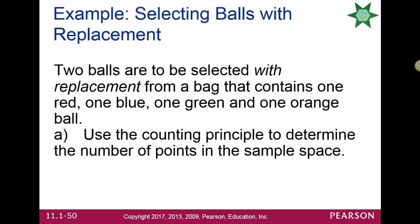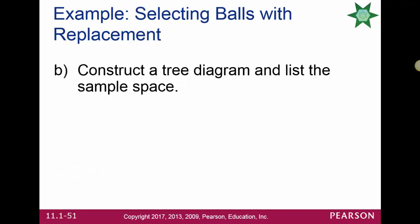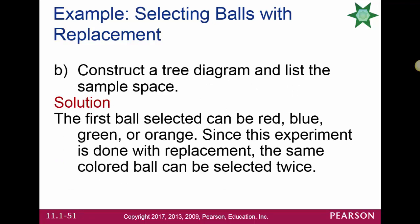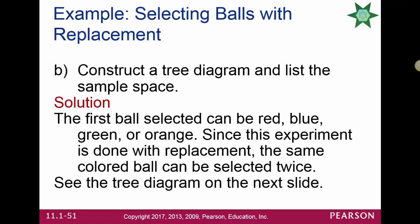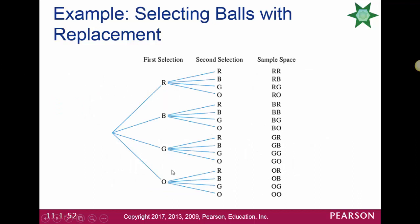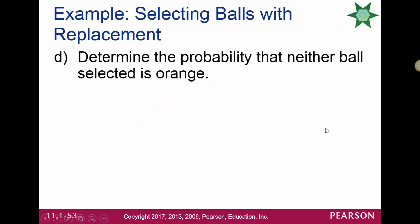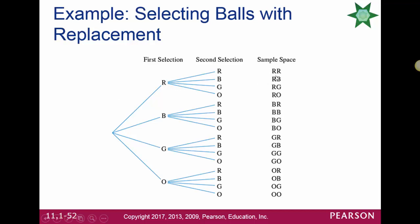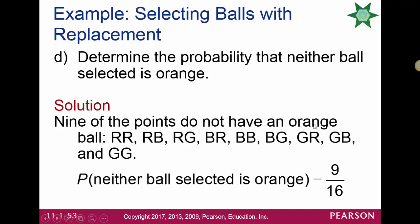Two balls are selected with replacement from a bag containing one red, one blue, one orange, and one green. Using the counting principle: 4 × 4 = 16 points in the sample space. A tree diagram shows all first and second selections. To determine the probability that neither ball selected is orange, we count the sample points with no orange ball — there are 9 such outcomes — so the probability is 9 out of 16.